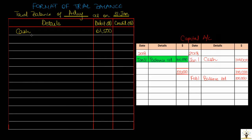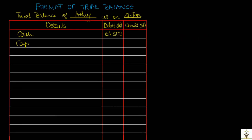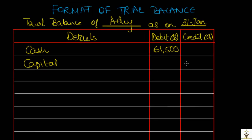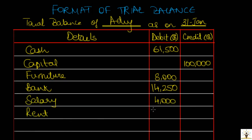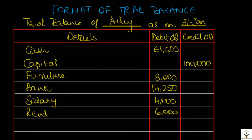In the details column, we write the capital account. And since capital account has a credit balance, we write the amount in the credit column. Continuing further, furniture account has a debit balance of $8,000. Bank account has a debit balance of $14,250. Then we have the salary account. Rent account, debit balance of $6,000.